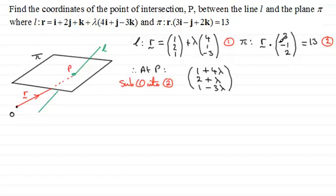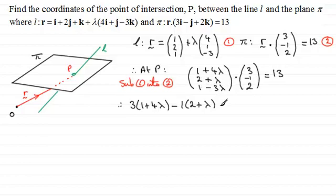And if I substitute this into equation 2, we've got R here, and then we're dotting it with this vector (3, -1, 2), and that comes to 13. And if we dot these two vectors together, we're therefore going to have 3 times (1 + 4λ), and then minus (2 + λ), and then plus 2 times (1 - 3λ), and this comes to 13.